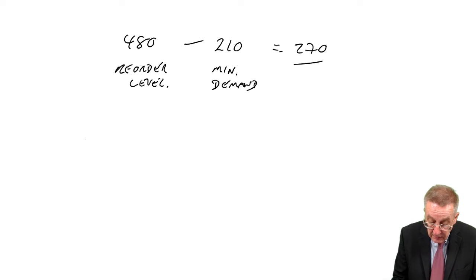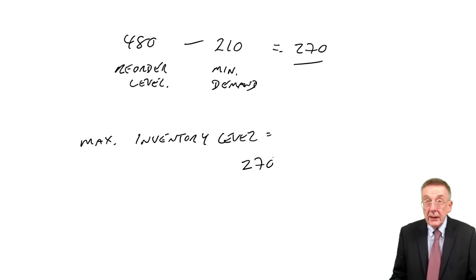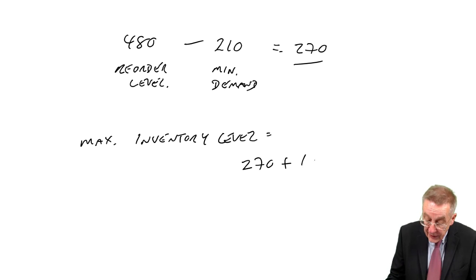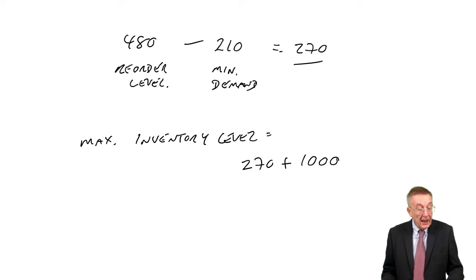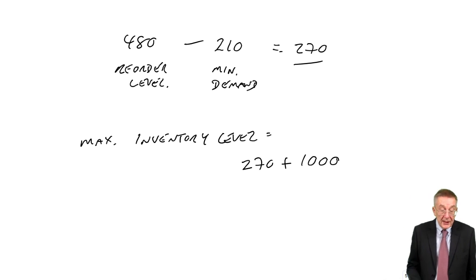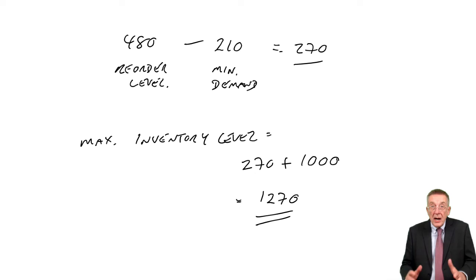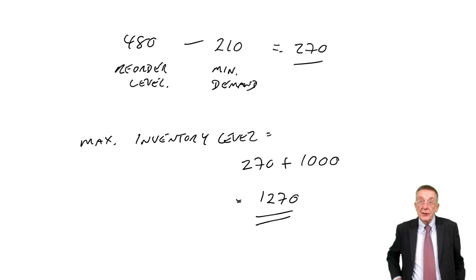The new order arrives and the order quantity is 1000. And so our maximum possible inventory level is the 270 that the maximum could be left, plus the 1000 in the order, the order quantity. So 1270. That's the most that we could ever have in the inventory.